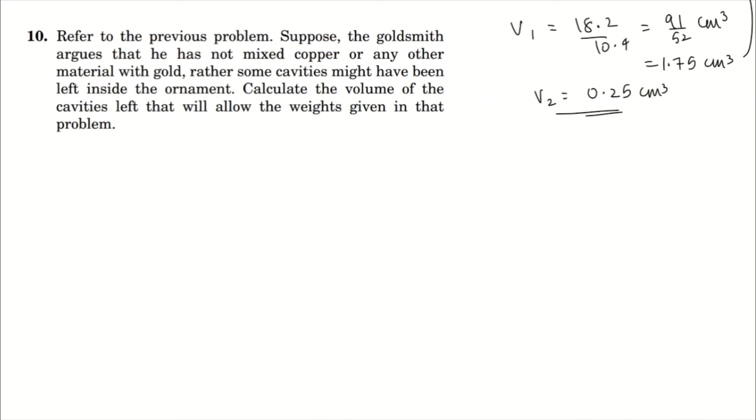Refer to the previous problem. Suppose the goldsmith argues that he has not mixed in copper or any other material with gold. Rather, some cavities might have been left inside the ornament. Calculate the volume of the cavities left that will allow the weights given in that problem.